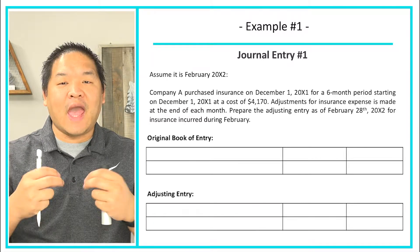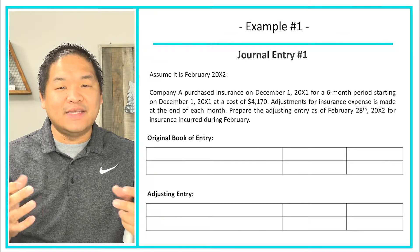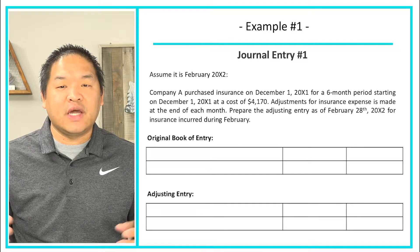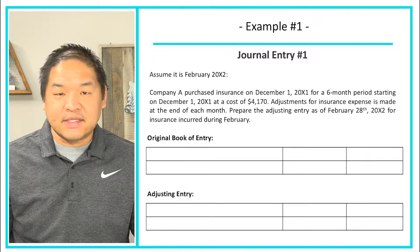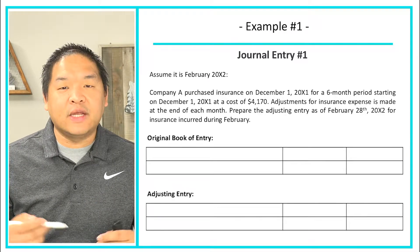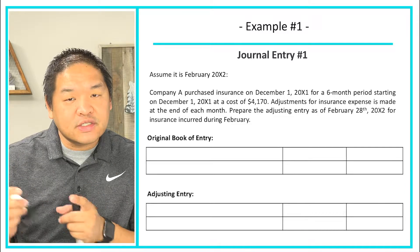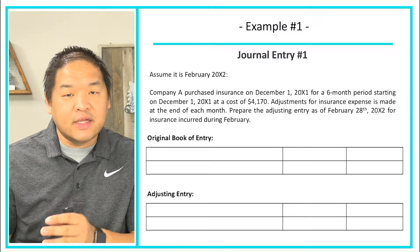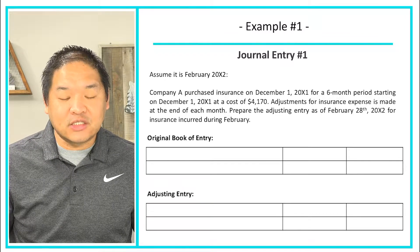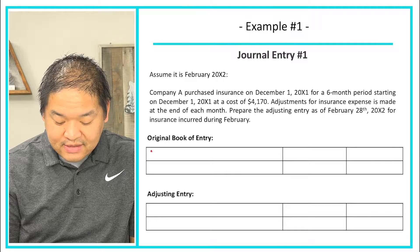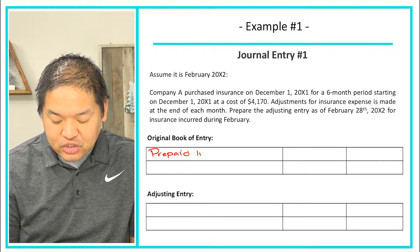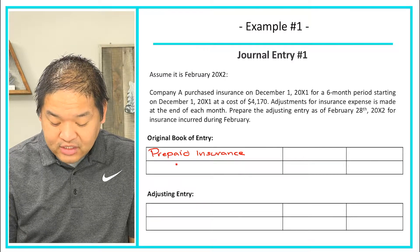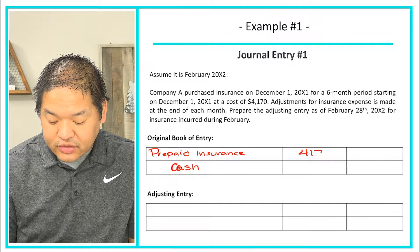On December 1st we exchanged cash for insurance. Insurance is not a product — what we're getting is a service: six months of insurance protection. So we gave up cash in exchange for prepaid insurance, not insurance expense, because we prepaid it. As time goes on, we then incur the insurance expense. The journal entry is a debit to prepaid insurance and a credit to cash for $4,170.